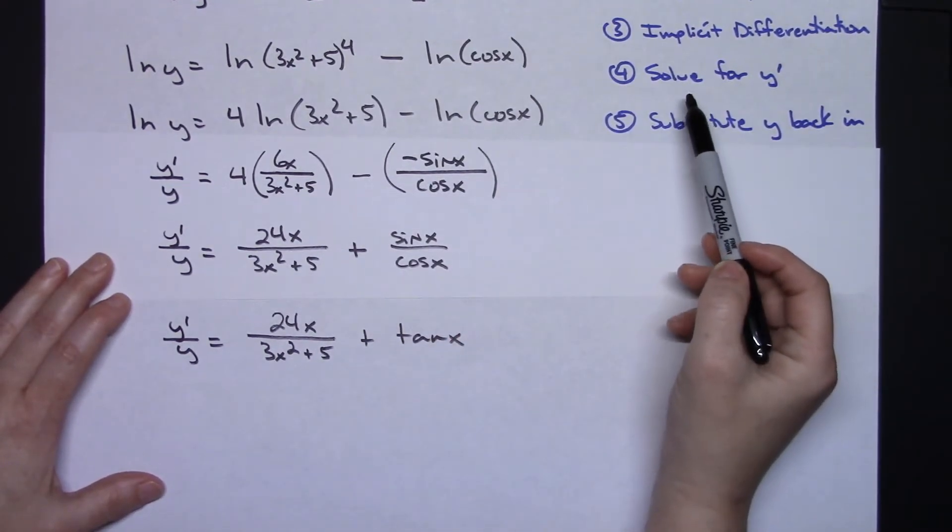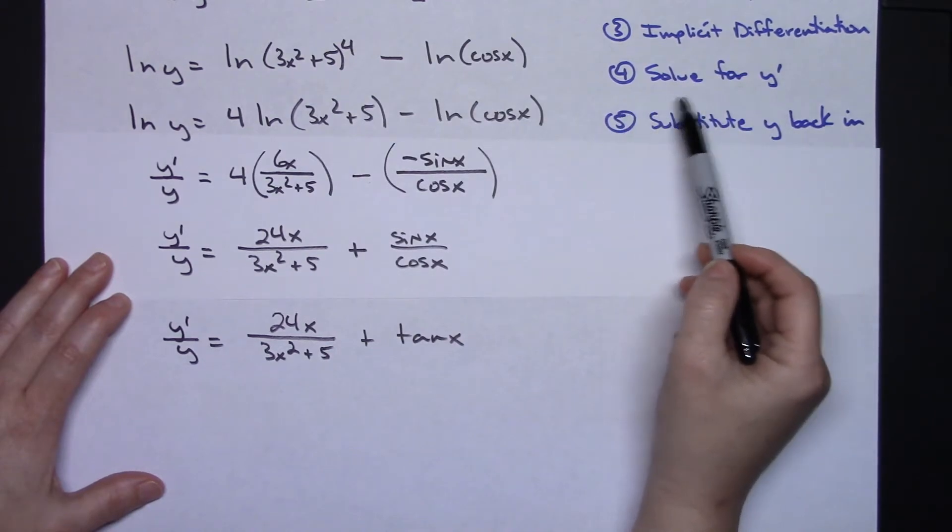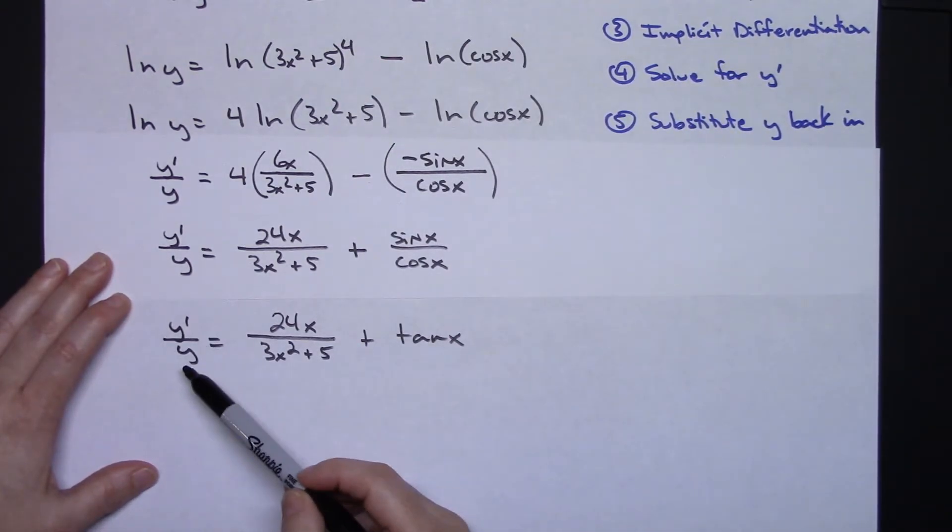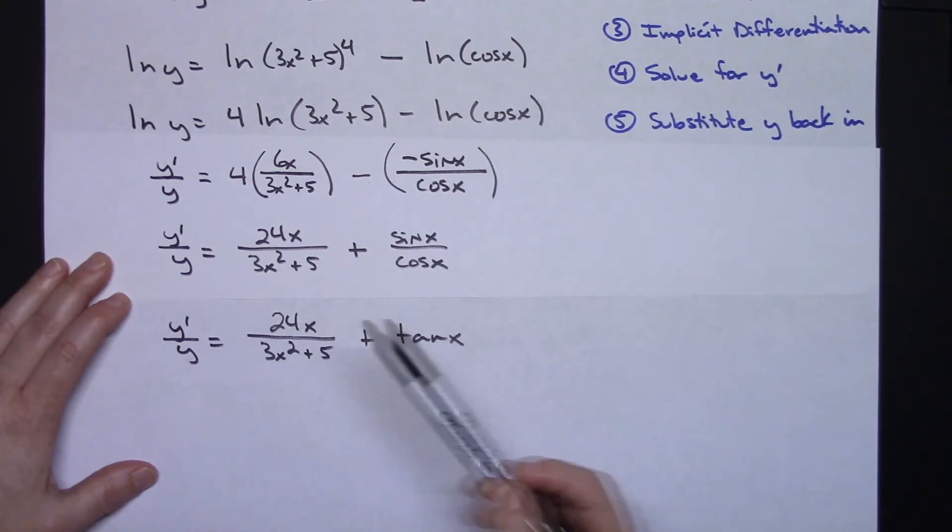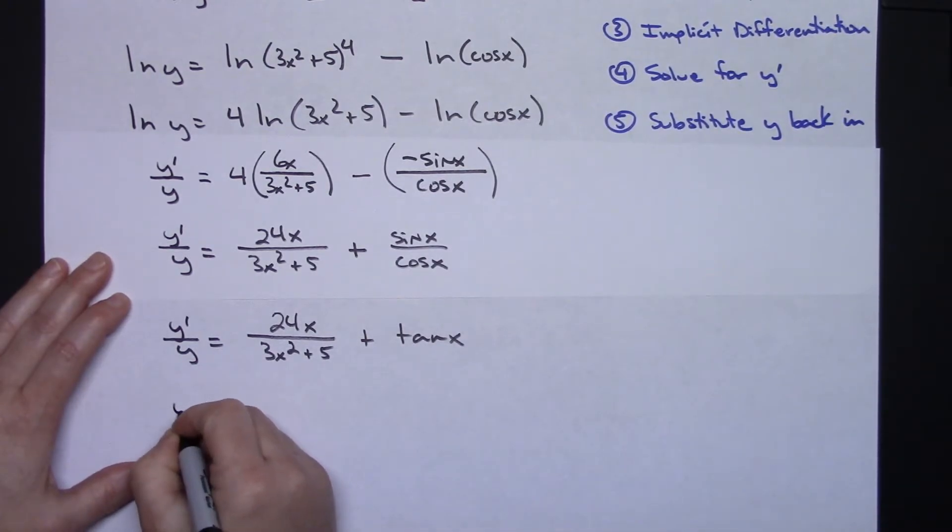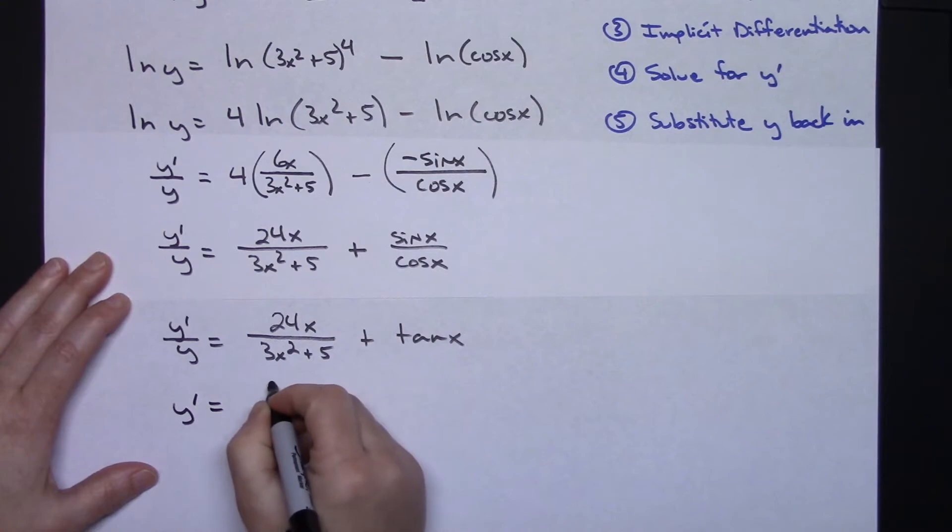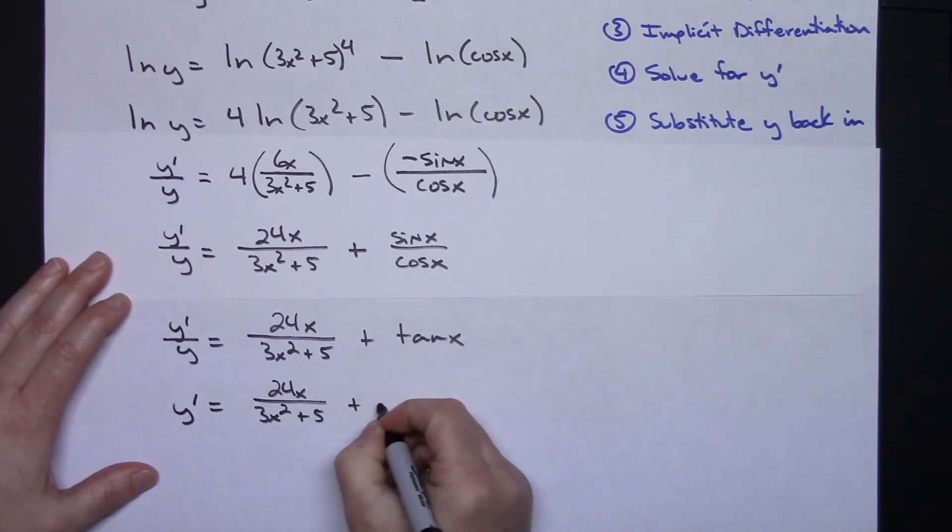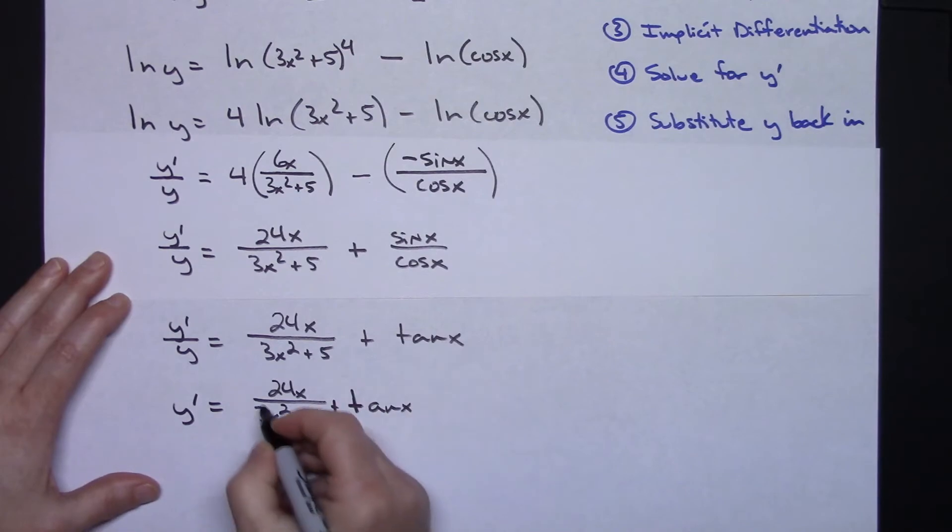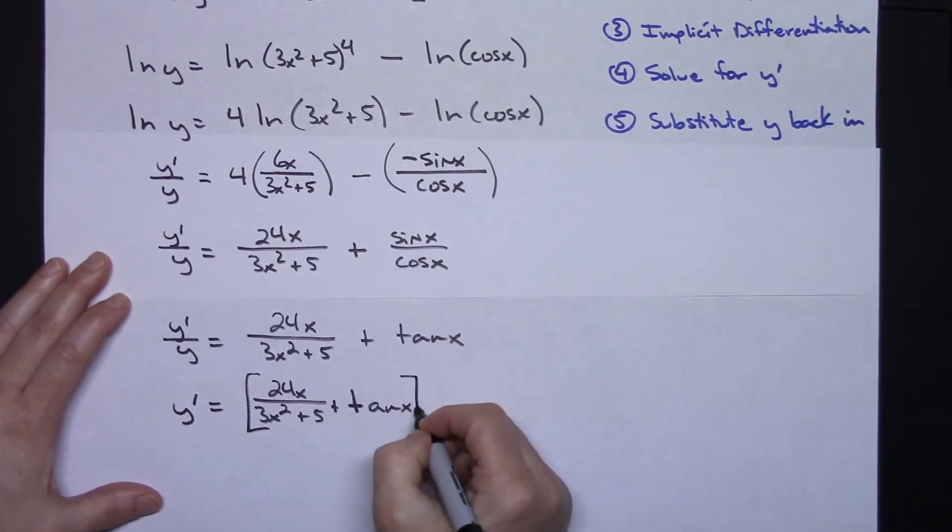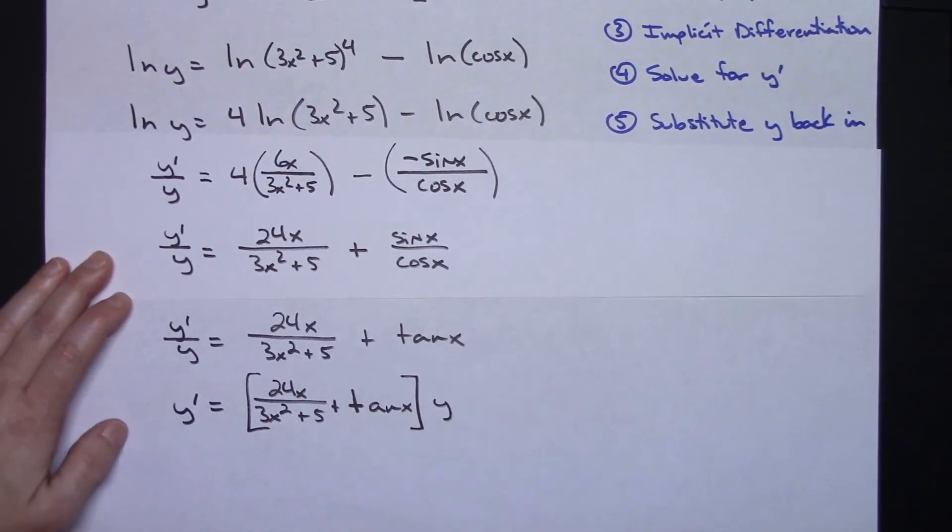Now I think I am to step 4 which is solve for y prime. My y prime is over here so that means I need to get rid of y. I'm going to multiply both sides by y. So y prime equals 24x over that 3x squared plus 5 plus tangent x, and then this entire thing times y. Because I multiplied both sides by y so it would cross out.